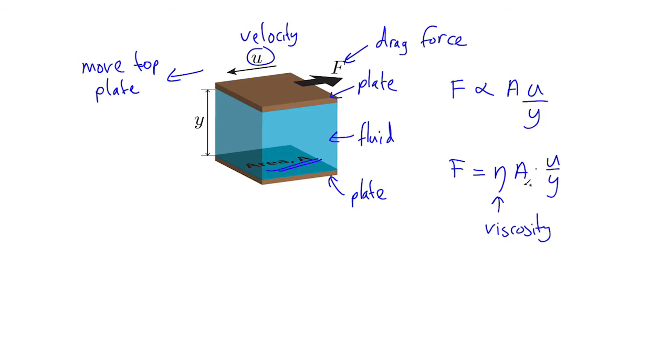So the next question is, well, what are the units for this? Well, obviously, here, on this side of the equation, we need newtons. Here, we've got meters squared. Here, we have meters per second. And here, we have meters. So what these three quantities give us, essentially, is meters squared per second. And so the units for viscosity are going to have to be newton seconds per meter squared.